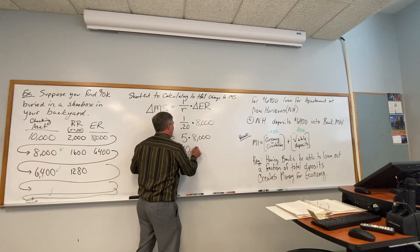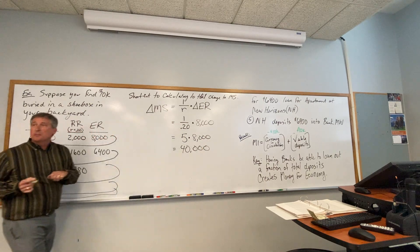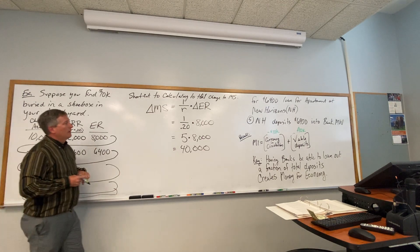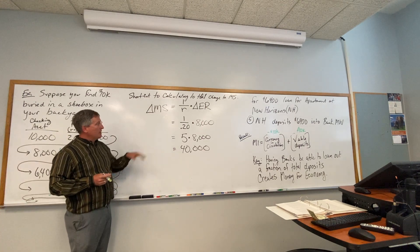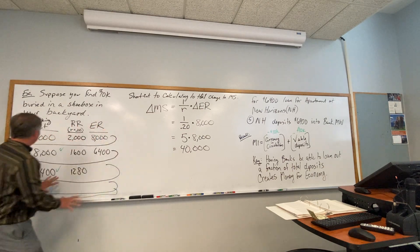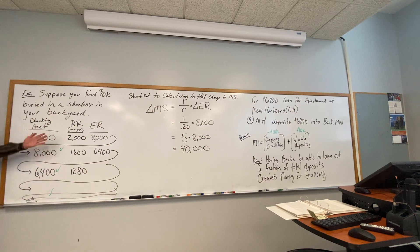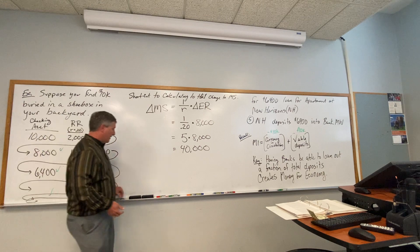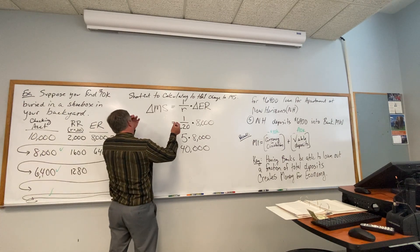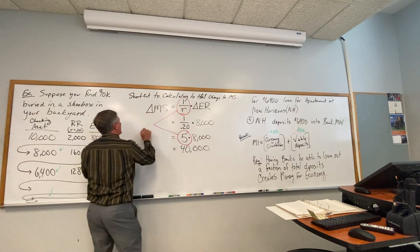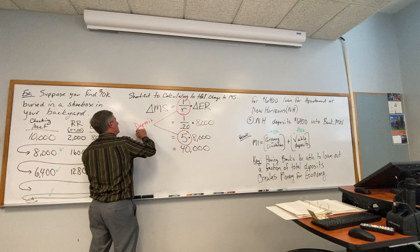The multiplier is 5 times $8,000, which equals $40,000. If you added up all those numbers from the loan chain, you'd get $40,000. This is the deposit multiplier — the shortcut way to calculate the total change in the money supply.